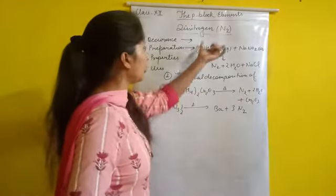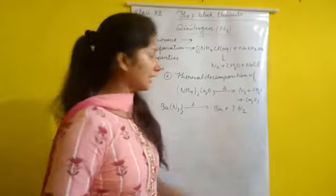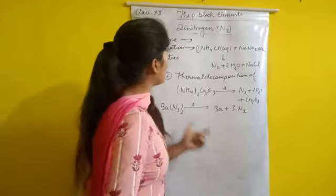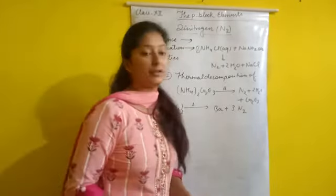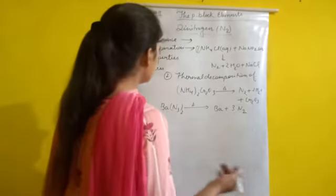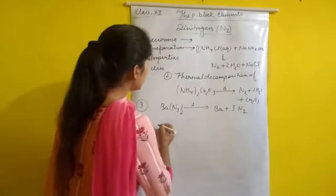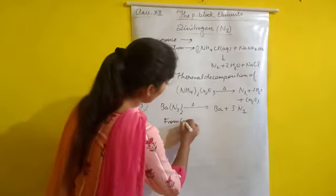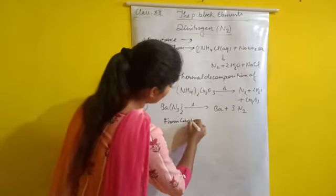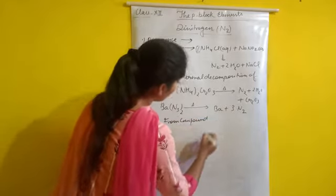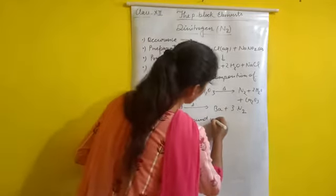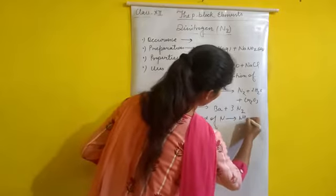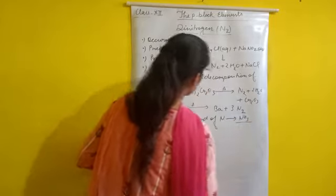Dinitrogen can also be prepared from compounds of nitrogen, such as ammonia. When an excess amount of ammonia is treated with chlorine gas, dinitrogen is formed.